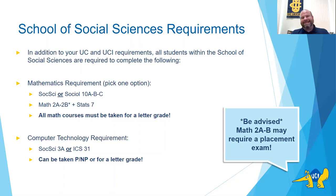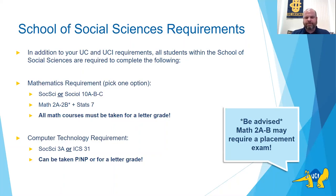The second School of Social Sciences requirement is the computer technology requirement — a one-course commitment. Most students will take Social Science 3A, our version of computer technology in social sciences. There is also ICS 31, taught by the computer science school on campus, which is more challenging to get into and is taken by computer science majors. Many students decide on Social Science 3A because it is more readily available every quarter. You can take this course for either pass/no pass or for a letter grade.